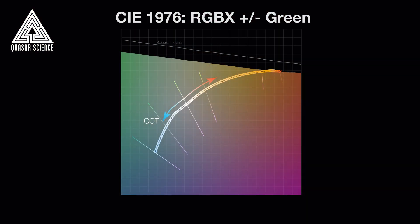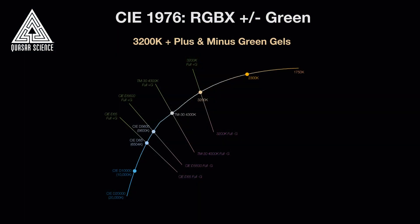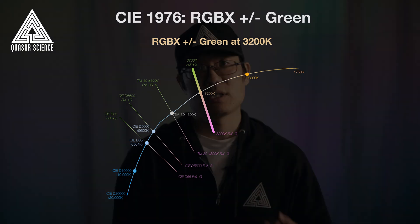In addition to the orange and blue axis, we've also given you the best possible green-magenta axis of control, which is plus/minus green. We've calibrated it to the traditional plus and minus green gel chromaticities. We improved upon them because, in addition to adding a green or magenta shift, green gels generally cool off CCT and magenta gels warm up CCT. Instead, we maintain the CCT so that when you add plus green or minus green, you don't have any unintended CCT shifts.